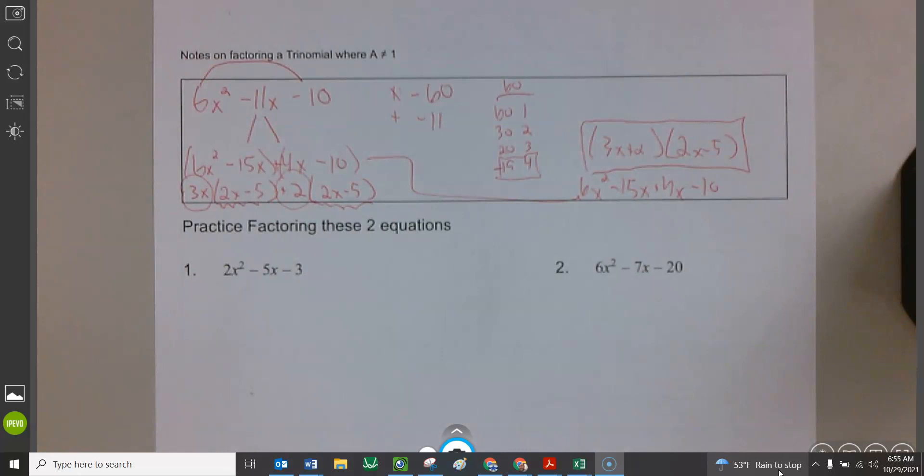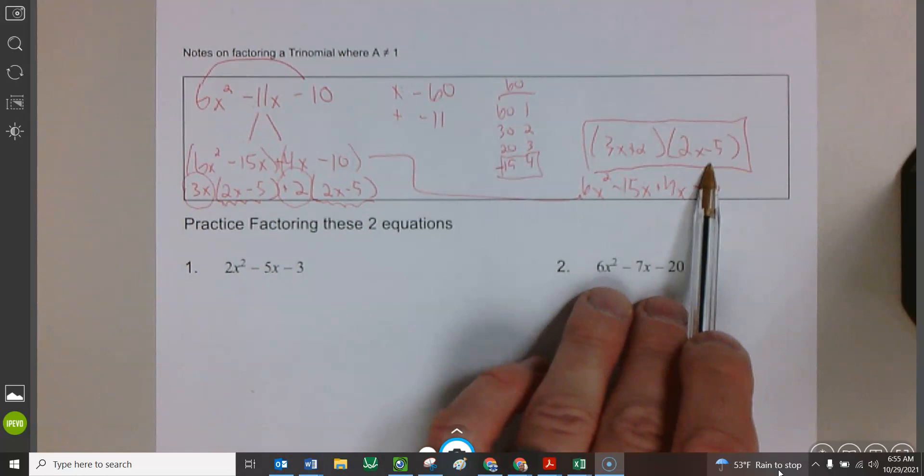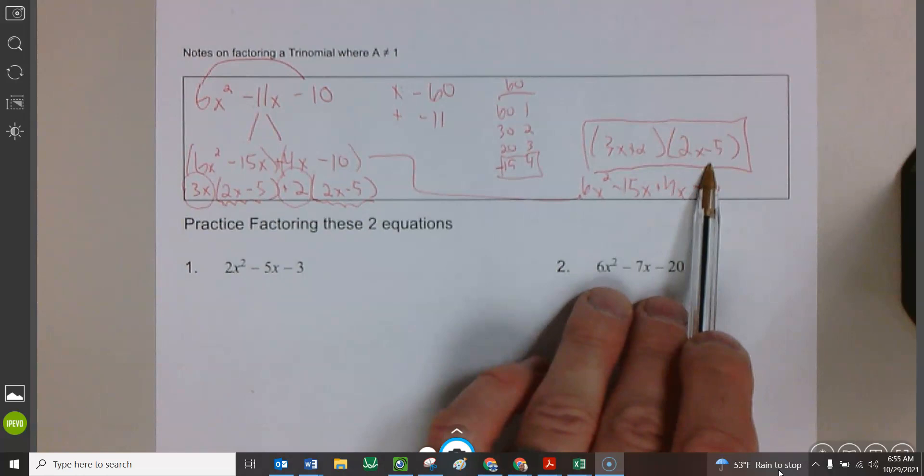That is factored form. That's intercept form for this trinomial. If I asked you for the x intercepts, we would still have to go finish the problem and set these equal to zero. But if it just says factor, we're done. Okay?